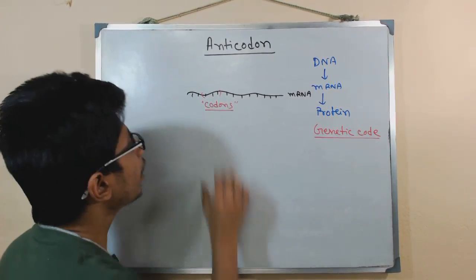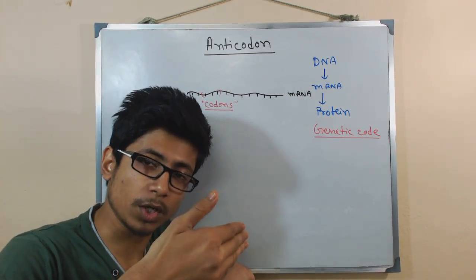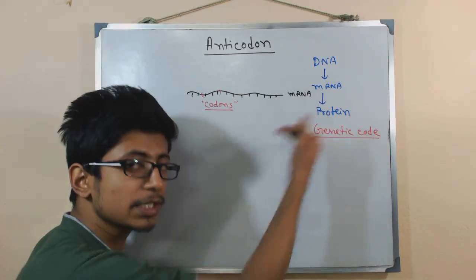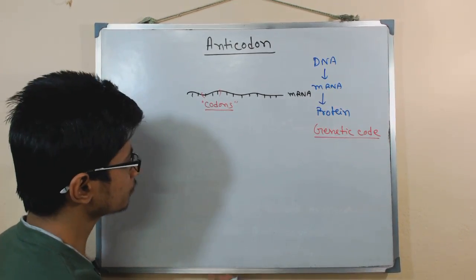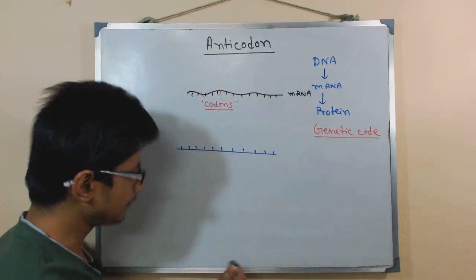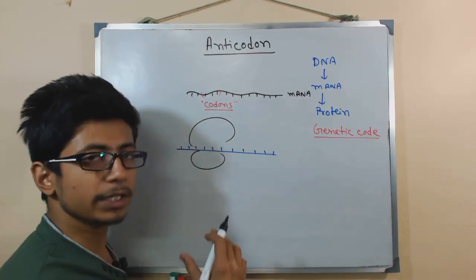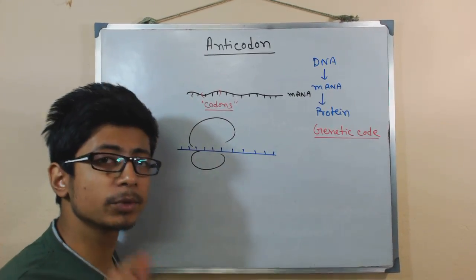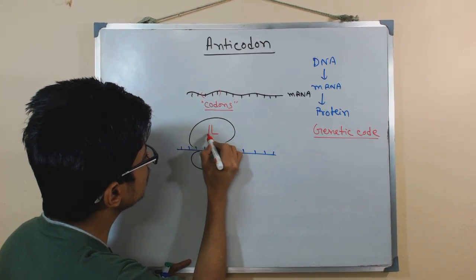Each codon — three nucleotides — is specific for coding a particular amino acid. To interact with those codons we need an opposite three nucleotide sequence that will sit onto the codon, read it, and bring the right amino acid. During protein synthesis we require three major molecules: the mRNA, the ribosome — which is the machinery for protein synthesis — and the tRNA.